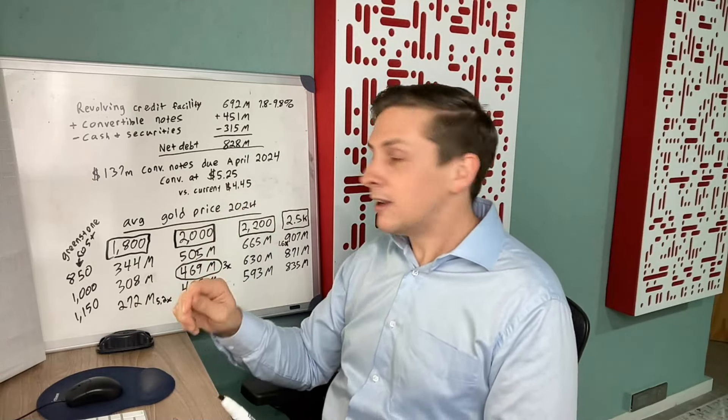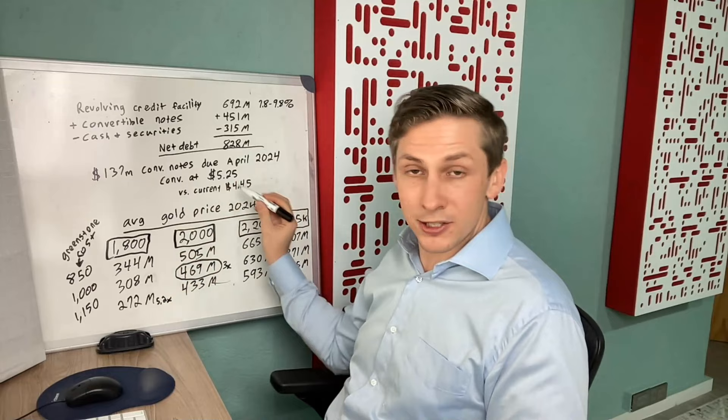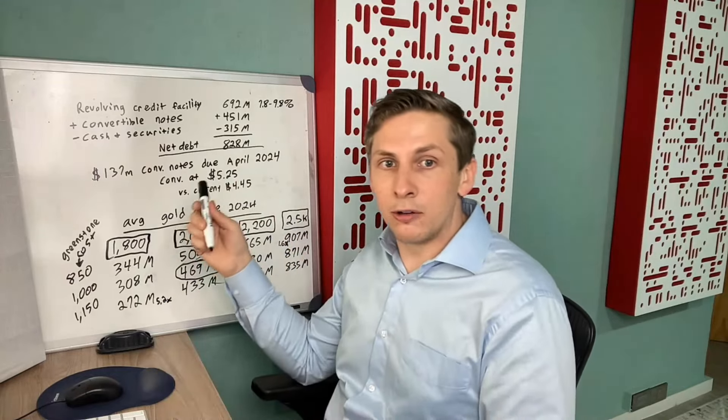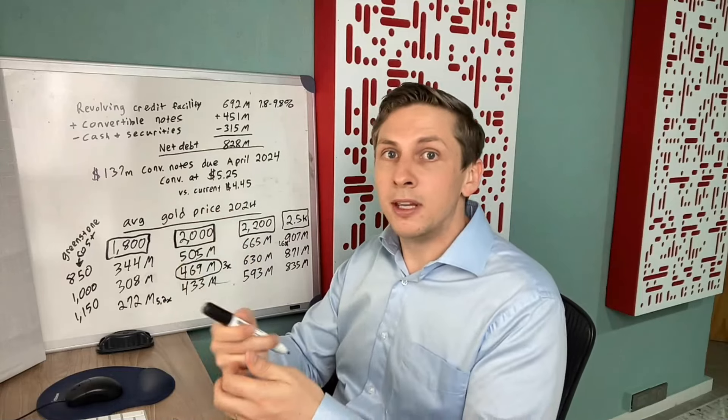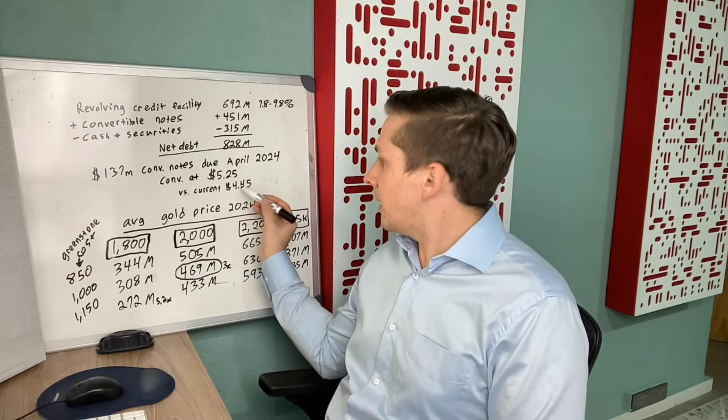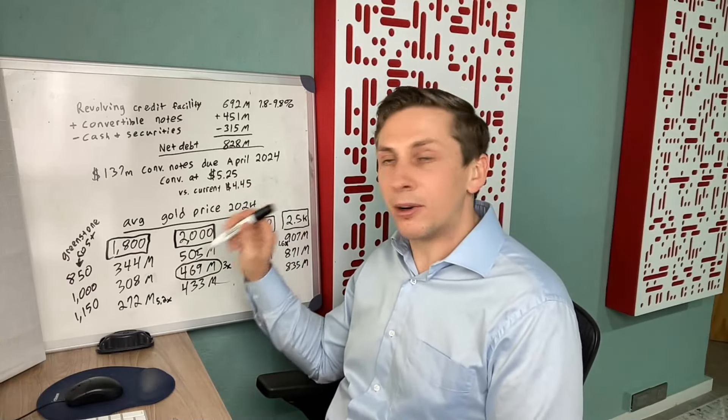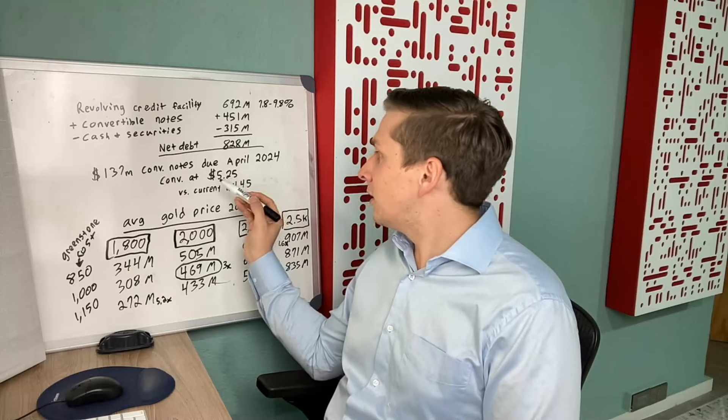If the share price is below $5.25, those are out of the money and the owners of those notes are not going to convert them into shares. However, if the stock price goes above that, then they're now in the money and the owners of those will convert them into shares. Since that's only a few months away and the stock price would have to go up 81 cents from today's price to be in the money, we will probably see Equinox have to pay the principal balance on that, which is $137 million.